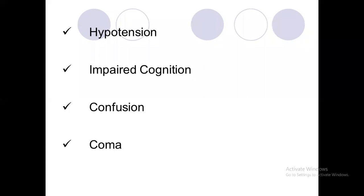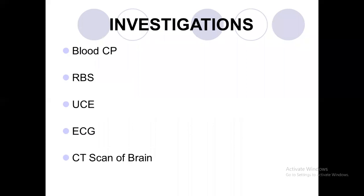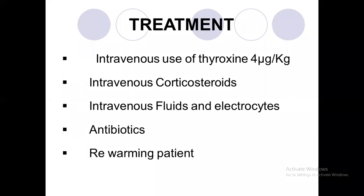Even with extensive treatment efforts, most patients die — the mortality is very high. Precipitating factors include infection, severe illness, CNS illness, and cold exposure. Investigations include blood count, blood sugar, electrolytes, creatinine, ECG, and CT scan of the brain. Treatment includes intravenous levothyroxine 4 micrograms per kg, intravenous corticosteroids, IV fluids and electrolytes, antibiotics, and ICU admission with special settings.